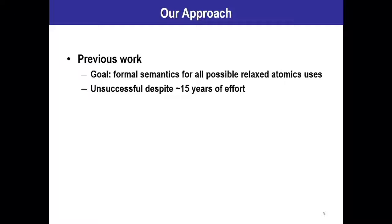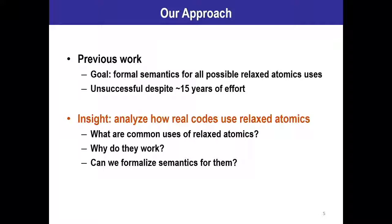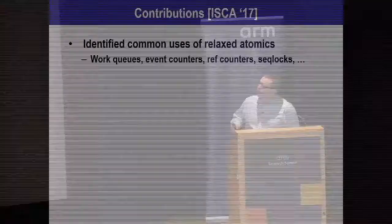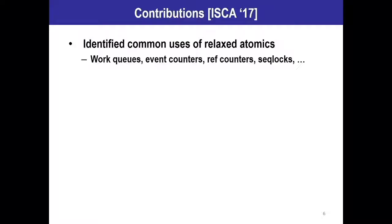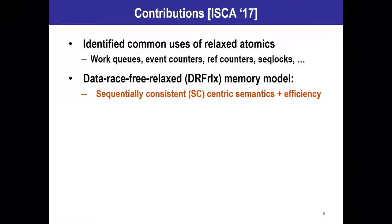Our insight to help address this problem is, instead of trying to address every possible case of how relaxed atomics could be used, to analyze how programmers actually use them in real applications. Specifically, we used three questions to guide this work: first, what are those common use cases? Second, why do they work — why can they use relaxed atomics? And third, armed with this knowledge, can we formalize a way to use them safely? What I'm going to talk about today is how we did that by first identifying a series of common relaxed atomic use cases in these systems — things like work queues, event counters, reference counters, seq locks, and so on.